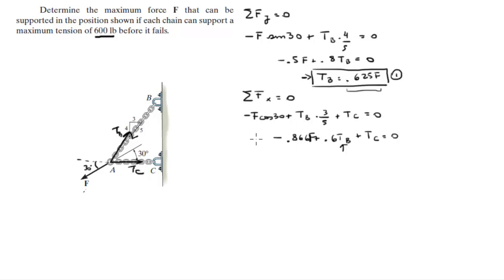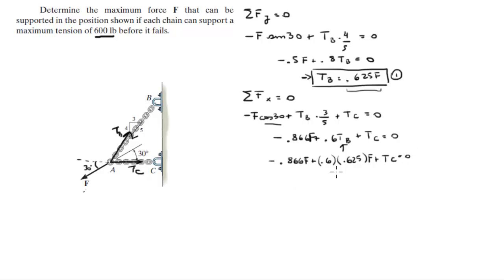Sorry, cosine of 30 is 0.866F. When I plug in the value for Tb, I get negative 0.866F plus 0.6 times 0.625F plus Tc equals zero. Solving for Tc, adding the F terms and passing them to the other side, we get Tc equals 0.491F.